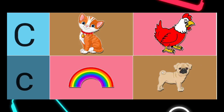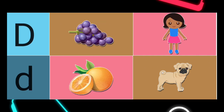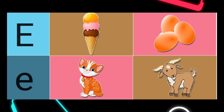C is for. Right answer: C is for Cat. D is for. Right answer: D is for Dog. E is for. Right answer: E is for Egg.